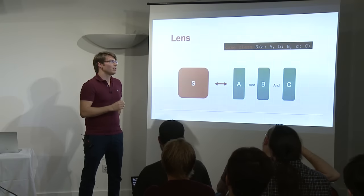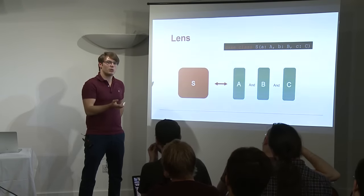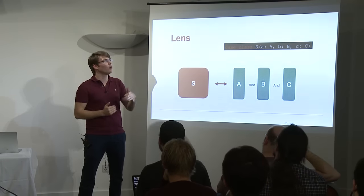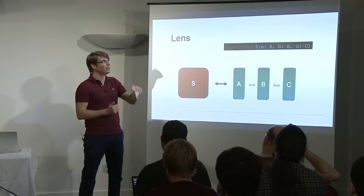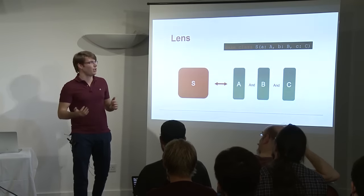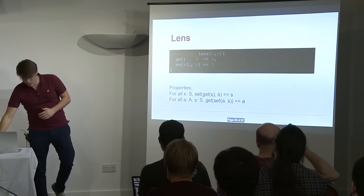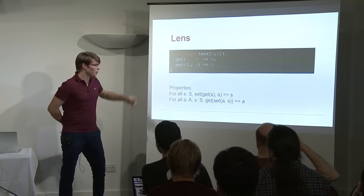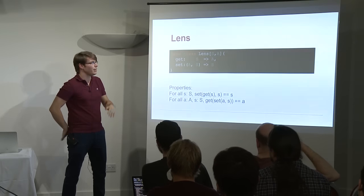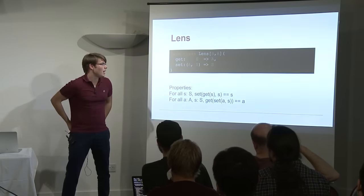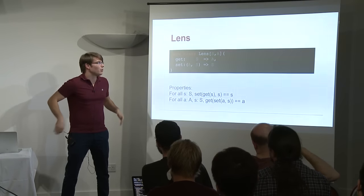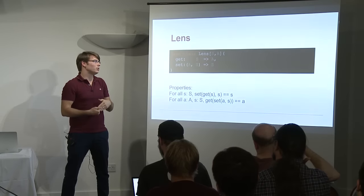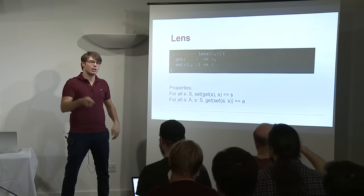Another point is that there is always an A inside of an S — contrary to prism which has a notion of failure, here we know we always succeed in one direction. So in one sense we always succeed, but in the other we need some extra information to reconstruct S. This is encoded via get and a set function. Get is straightforward — there's always an A inside the case class. But for set, an A alone is not enough; we need an extra S in order to inject our A inside.